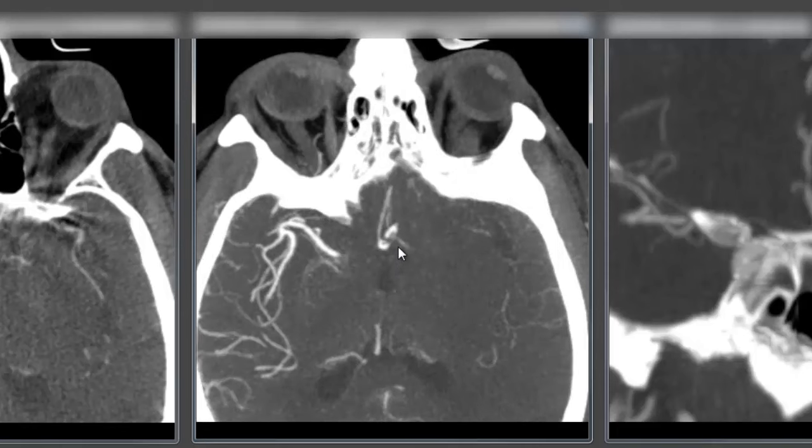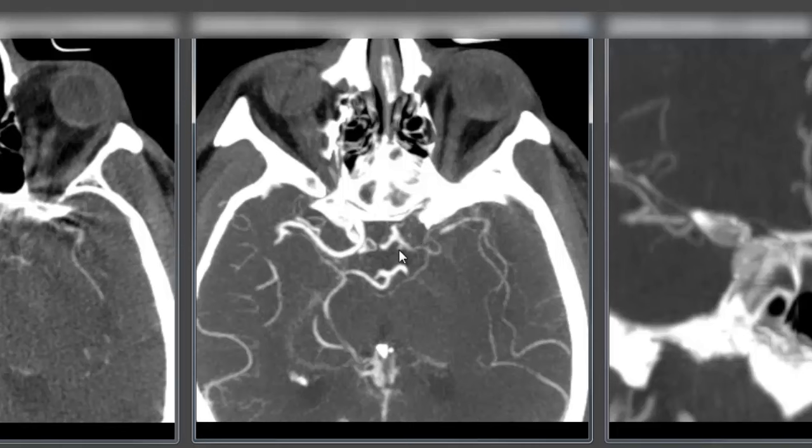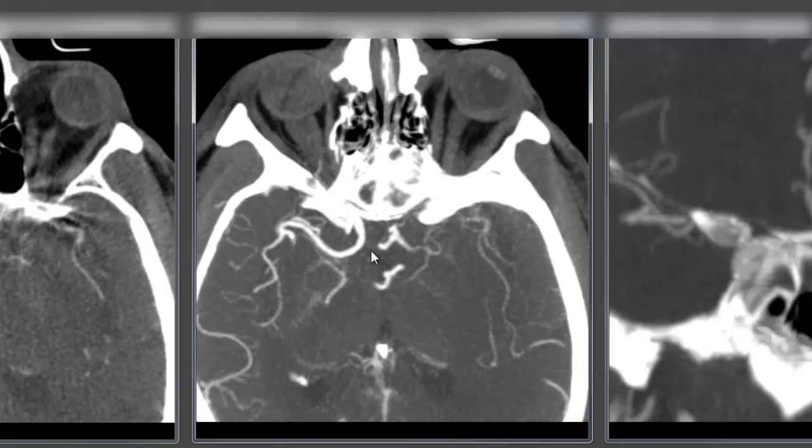There's a small degree of collateral filling or some degree of contrast making it past the clot into the anterior cerebral arteries on both sides as there's no obvious A1 or initial segment of the anterior cerebral artery on the right side, on the unaffected side.